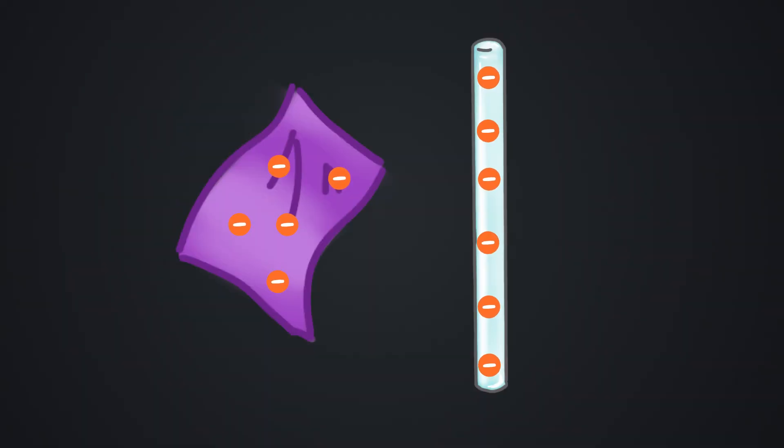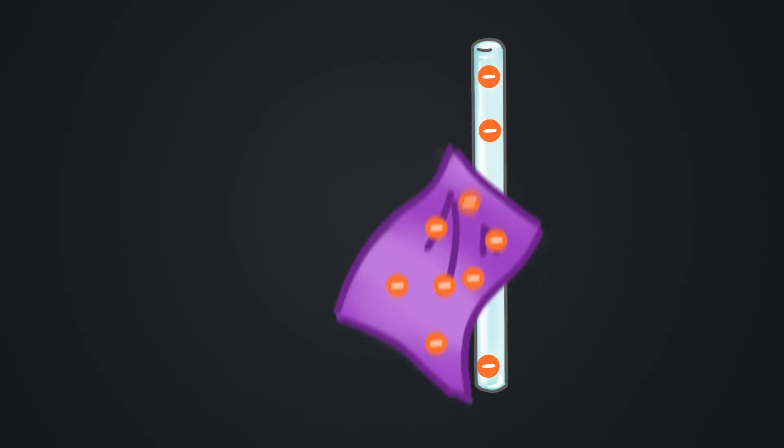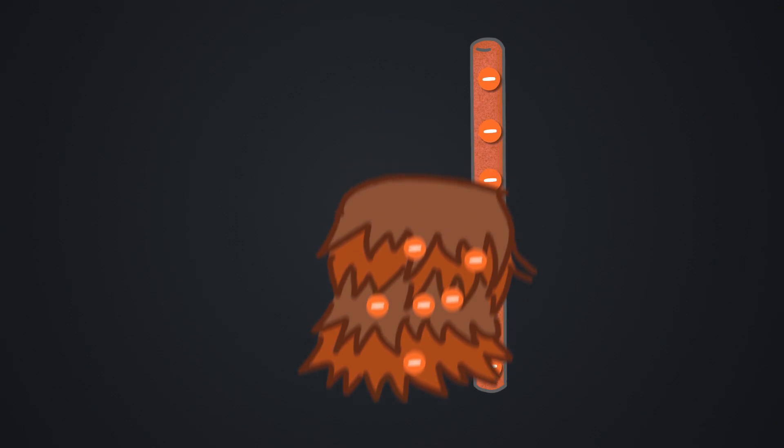But if he rubbed a glass rod with silk and a rubber rod with fur, those two would attract. He didn't realize what he was doing, but he was actually removing electrons from the glass rod when he used silk and adding electrons to the rubber when he used fur.